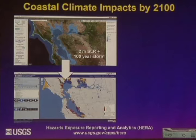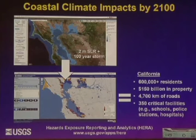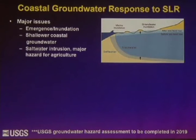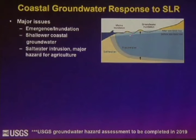We found these 2D maps weren't sufficient to get the point across, so we developed the Hazard Exposure Reporting Analytics tool — HARA — which translates 2D flood maps into something policymakers can really wrap their heads around, broken down by city or county. We now know that for California's urbanized coast, a more extreme sea level rise and storm scenario equates to over half a million people and $150 billion in property at risk, as well as thousands of miles of roads and critical facilities.